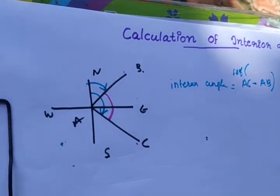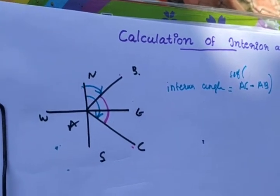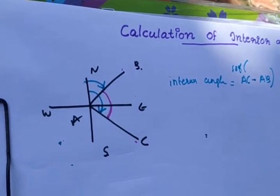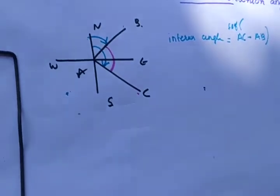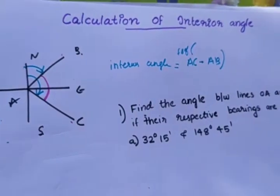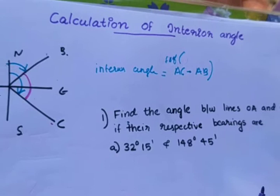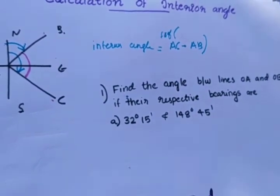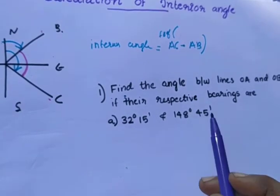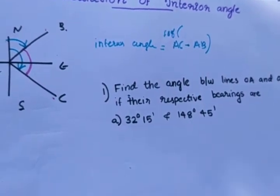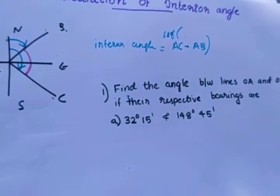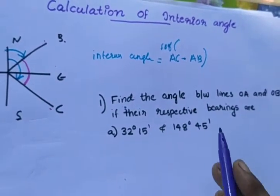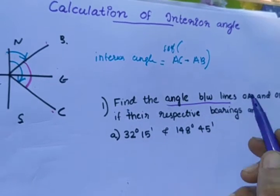You have to use the same bearing and mean bearing. The anterior angle is not directly related. Make an ideal angle using the bearing. Find the angle between lines OA and OB if they are respective bearings. The angle between the lines is the interior angle.